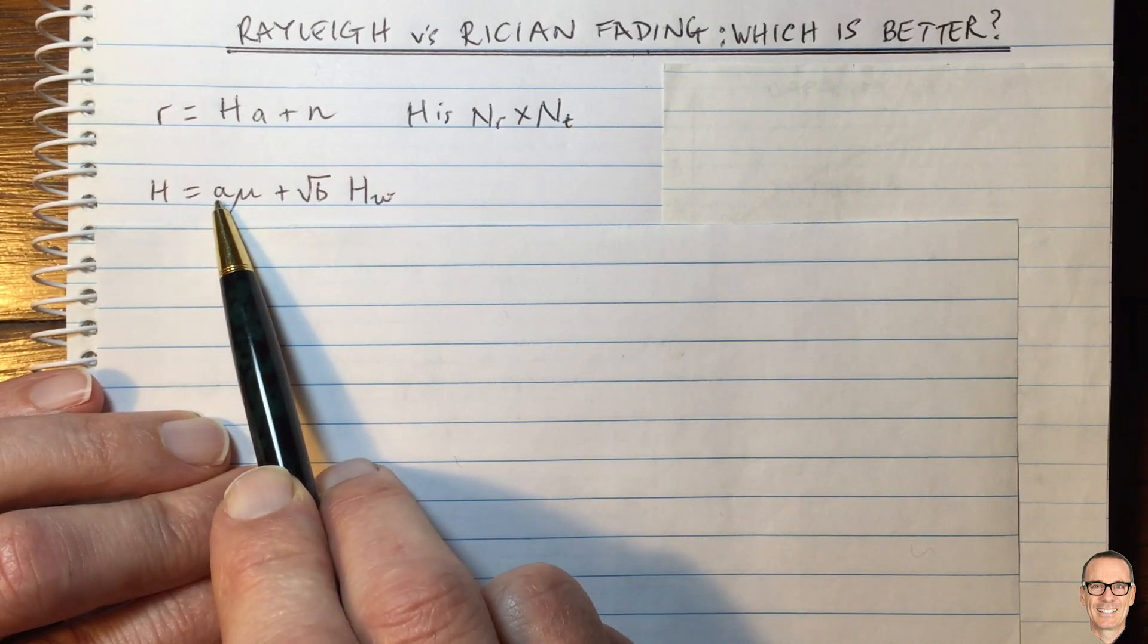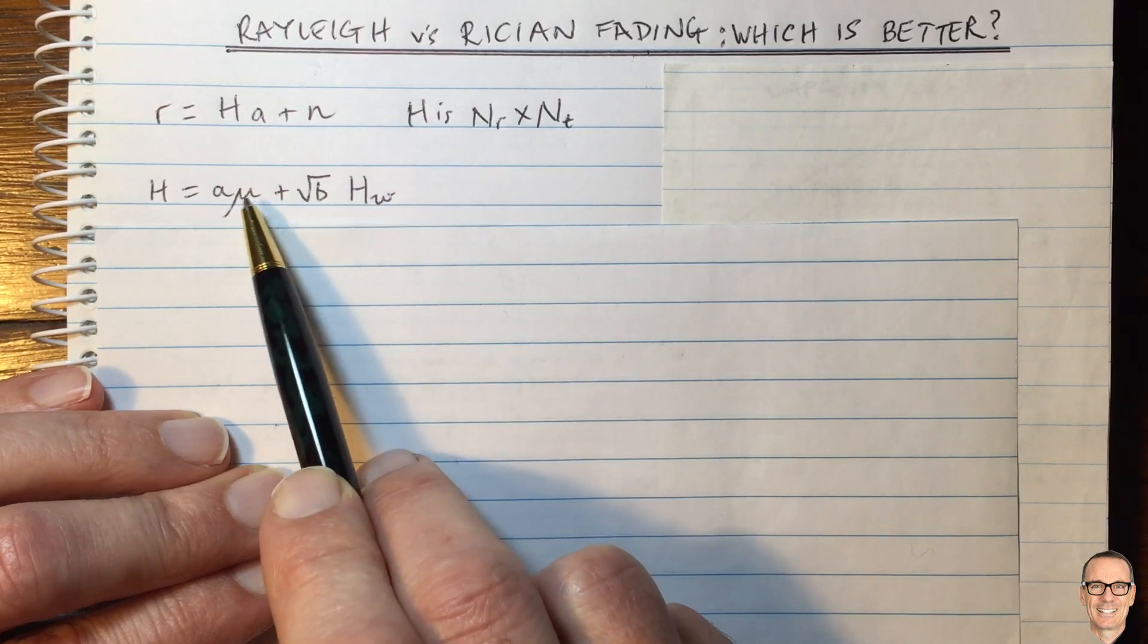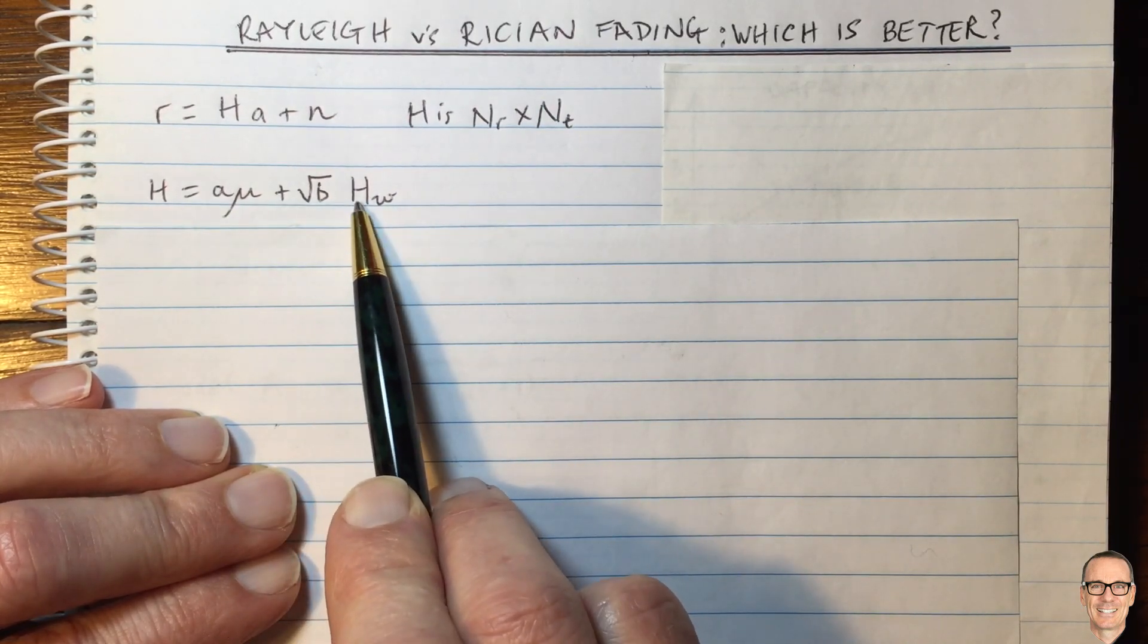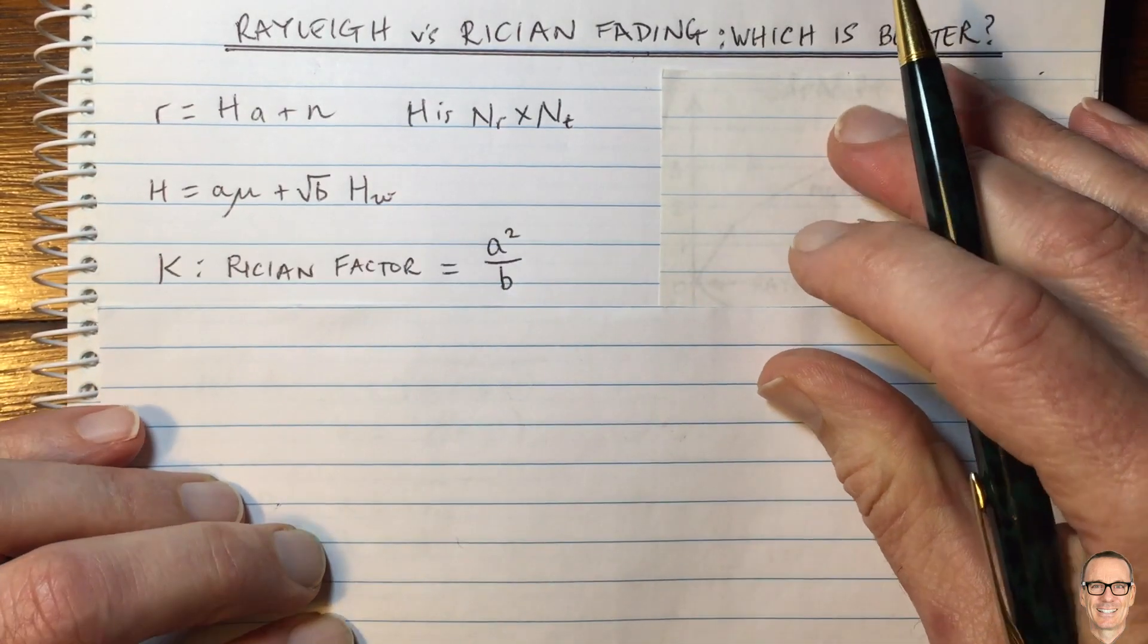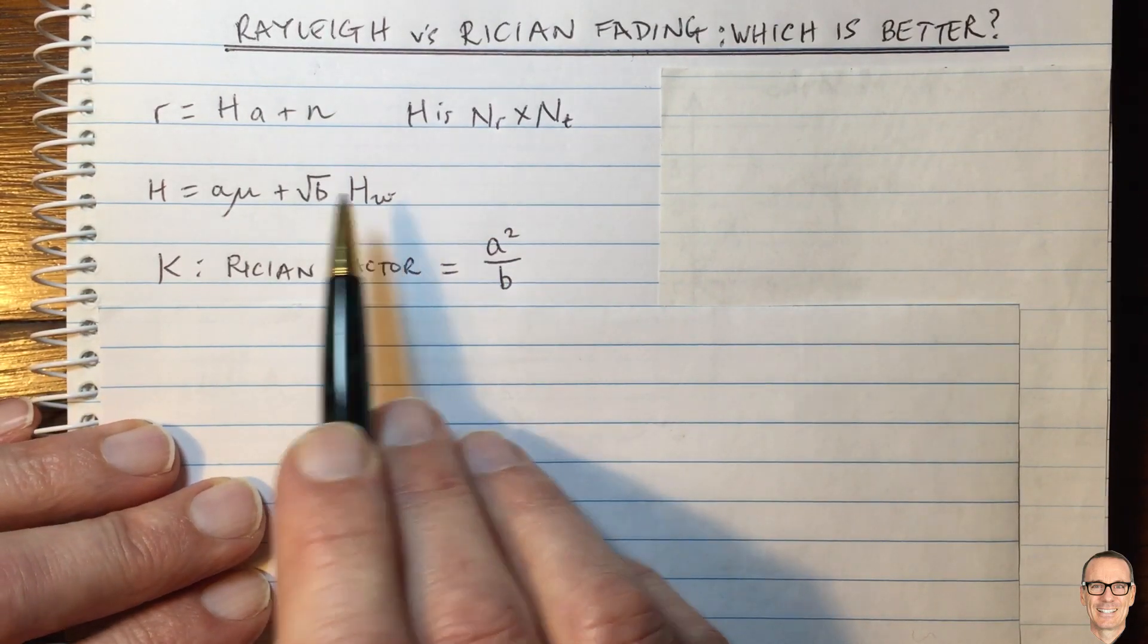And in the general model here, the channel H equals a gain term A times mu, which is the line of sight path or dominant path, plus the square root of B times H omega.